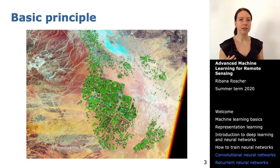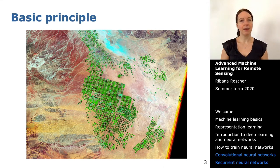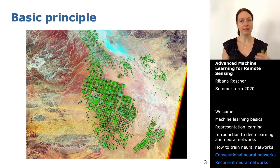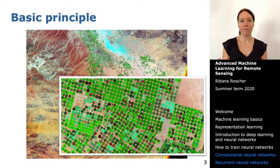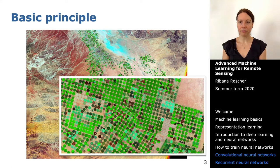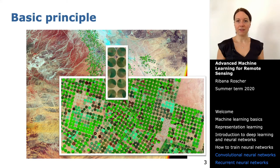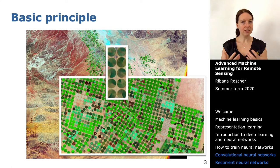Let's start with a toy example. We have a satellite image showing an area in Saudi Arabia, and we want to classify parts of the image into glass desert or aquaculture field. Looking more closely, all these aquaculture fields have a round shape due to pivot irrigation — a perfect, nice round shape.